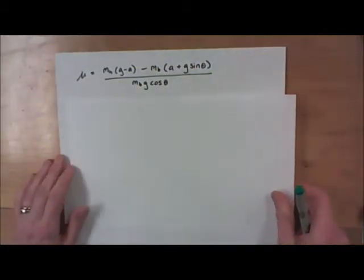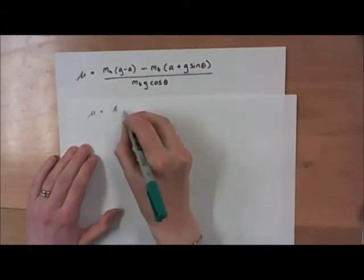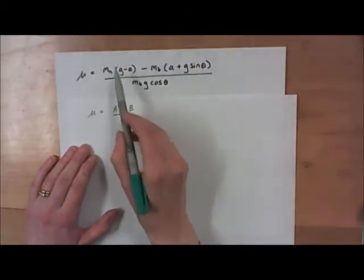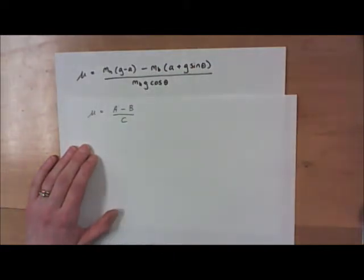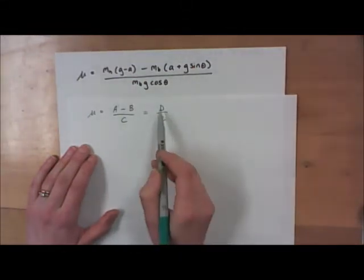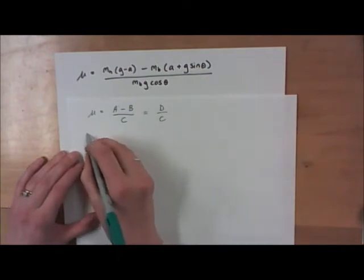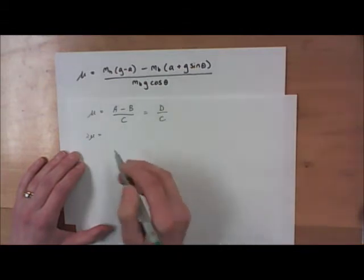I'm going to begin by rewriting this in a new form. I'm going to write this as mu is equal to capital A minus capital B over capital C, where A, B, and C each represent parts of the expression. I'm going to make one more simplification and rewrite this as D over C, so capital D equals capital A minus capital B. The reason why I'm doing this is that I can now apply the multiplication/division rule for uncertainty propagation to just this little bit here.